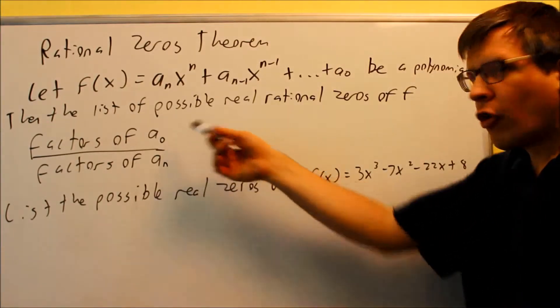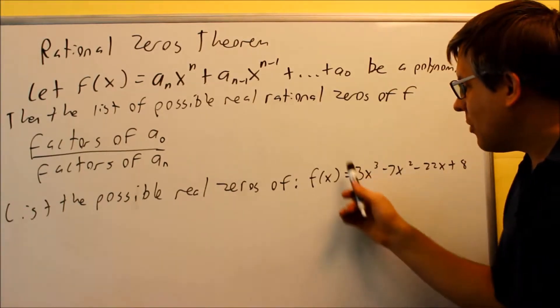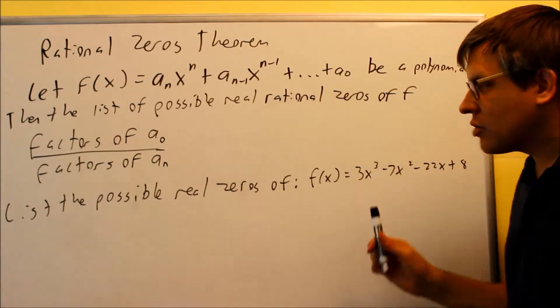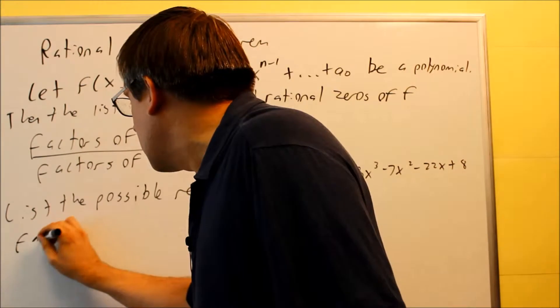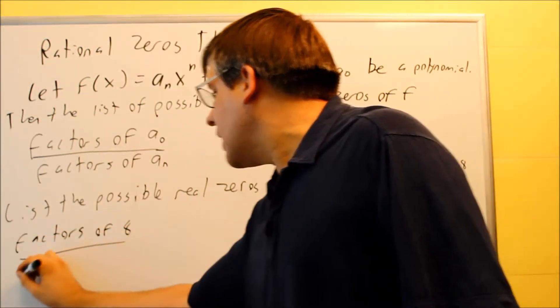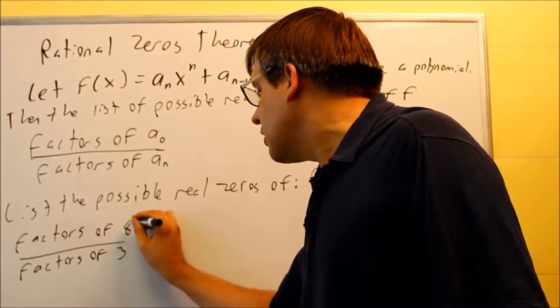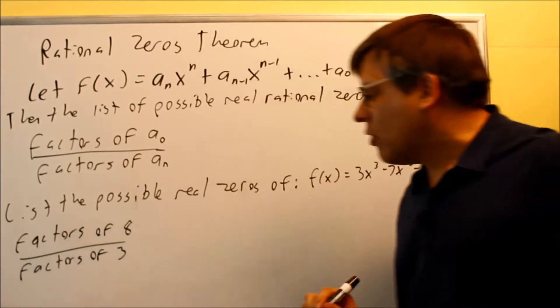When we use this formula, we're looking at factors of the last number, factors of 8, divided by factors of 3. So let's write that out. We're going to do factors of 8 divided by factors of 3. That's what we're doing here for that one.